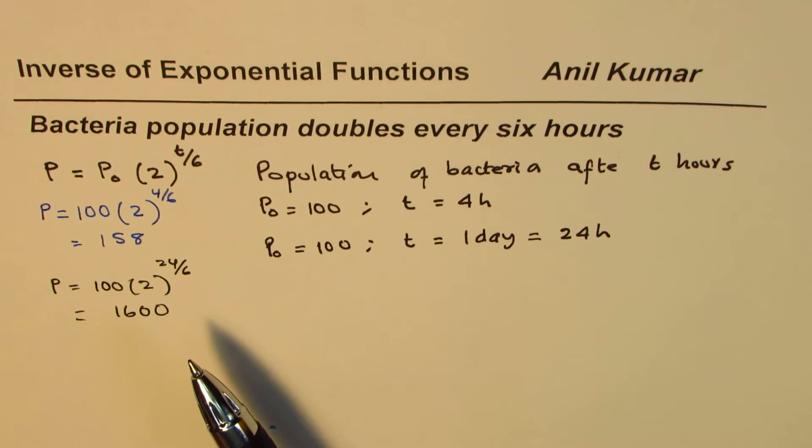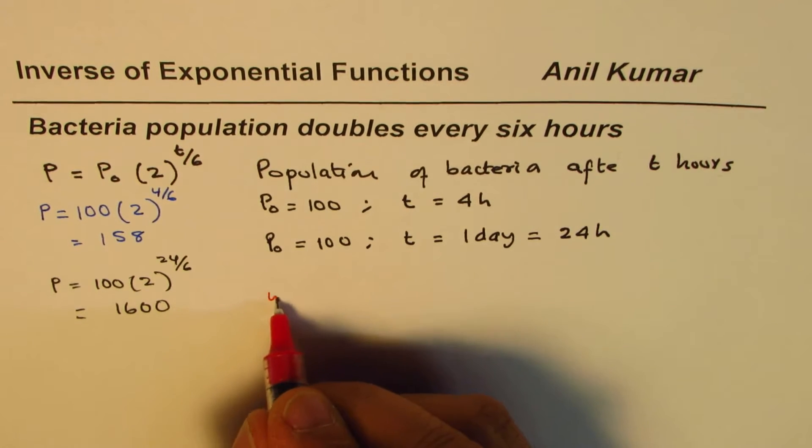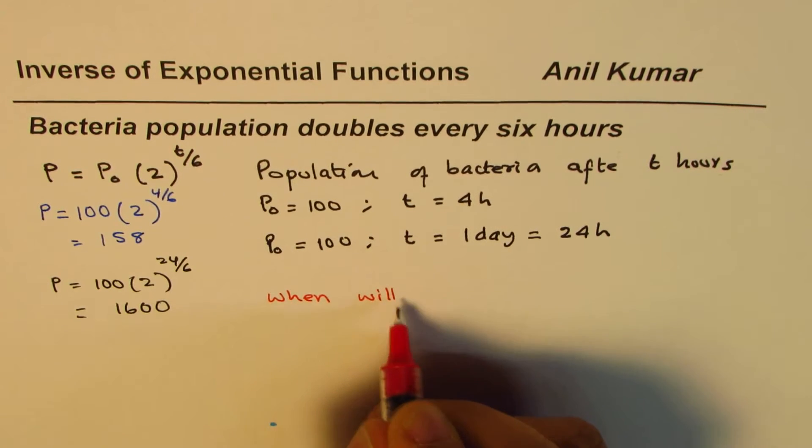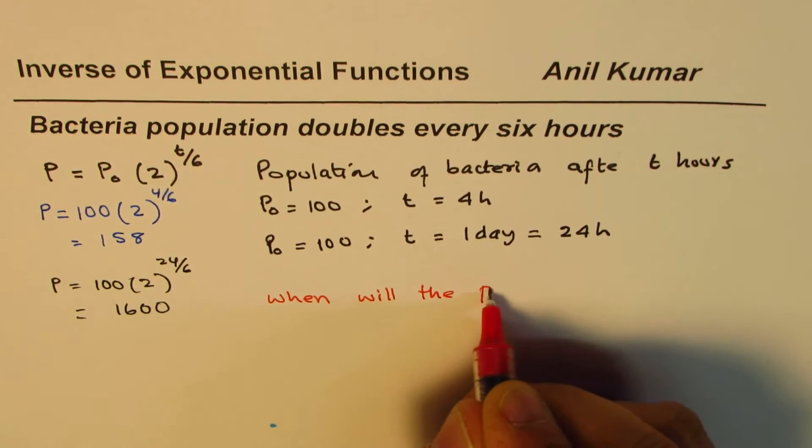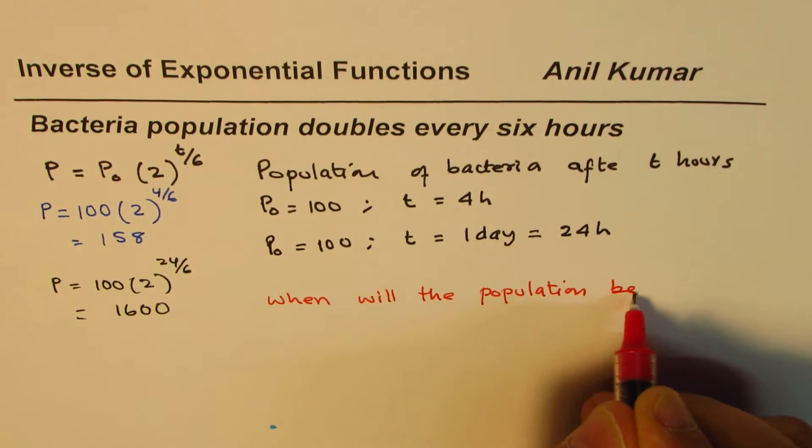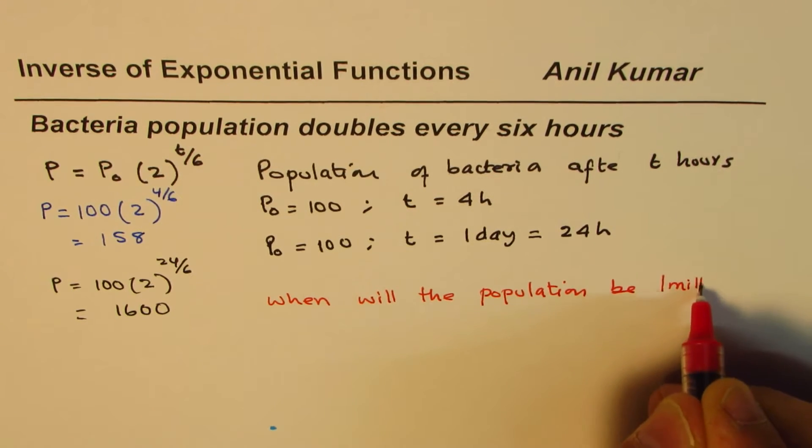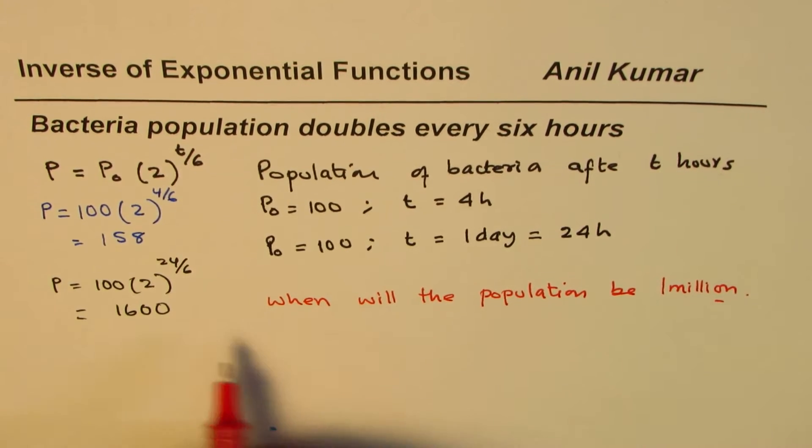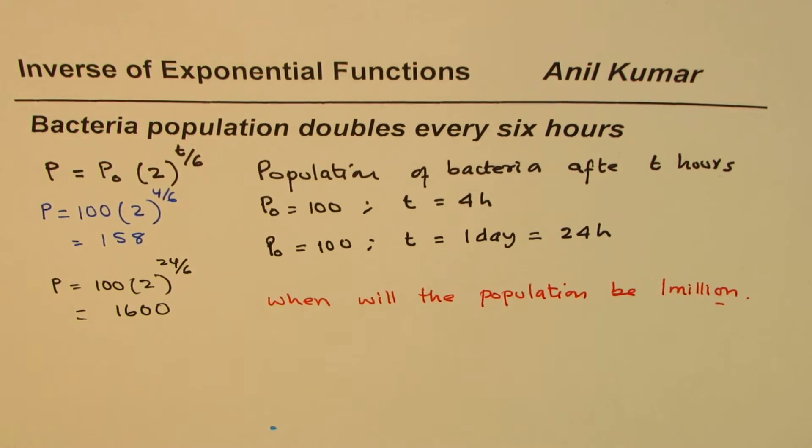So hundred becomes 200, then 400, 800, 1600. That is the result, four times it doubles. Now my question is: when will the population be 1 million? That's the question. Now from this equation which we have, how do you find the time when the population will be 1 million?